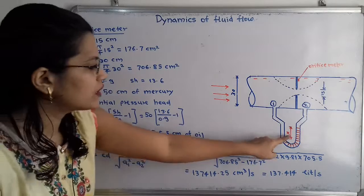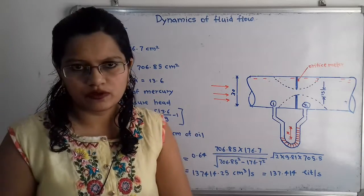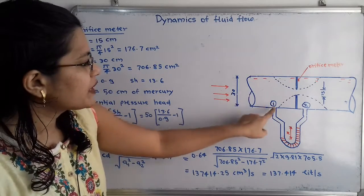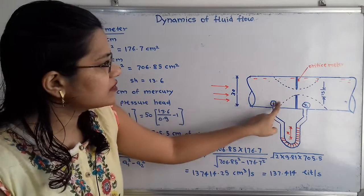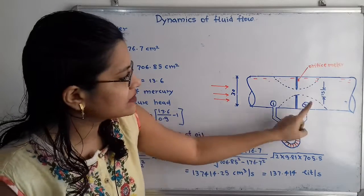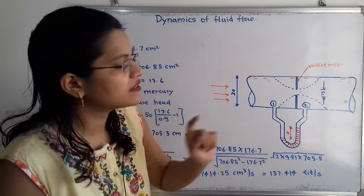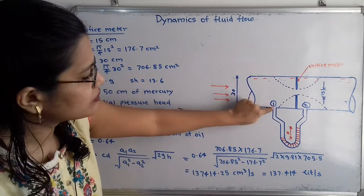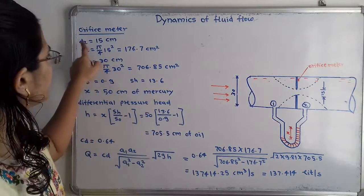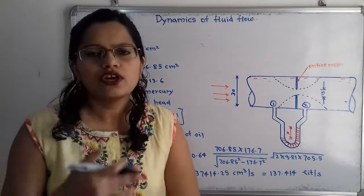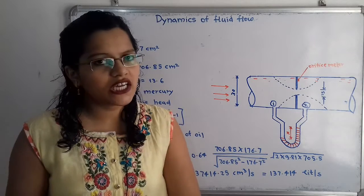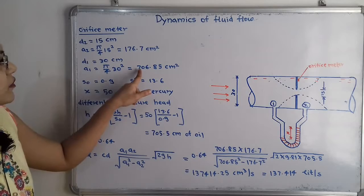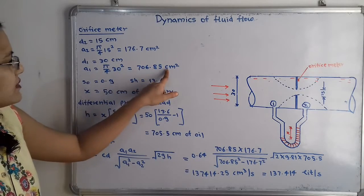This level difference is known as x, and the value of x is given as 50 centimeter of mercury. We will consider section one for the first side of the orifice meter and section two for the other side. The diameter at section one, d1, is equal to 30 centimeter. From that we calculate the area: A1 is equal to pi by 4 times 30 squared, which is equal to 706.85 centimeter square.